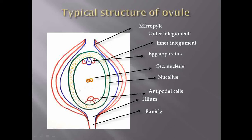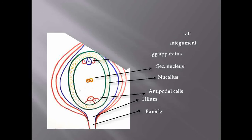The cells present outside the embryo sac are the nucellar cells — also called nutritive tissue — and the outer integument and inner integument. We must know what cells are present inside the embryo sac and what cells are present outside the embryo sac in order to understand the different types of polyembryony.